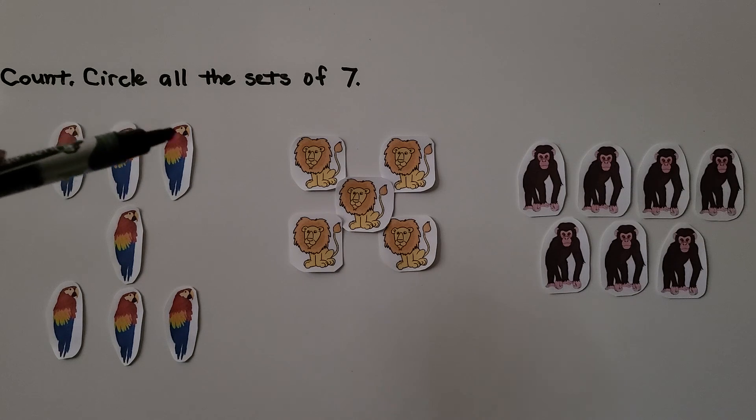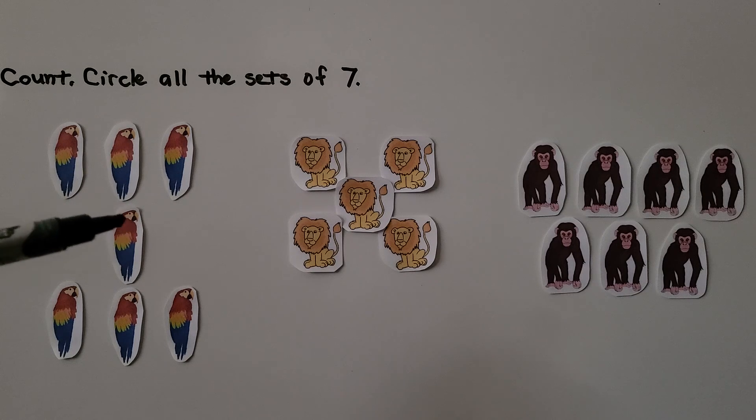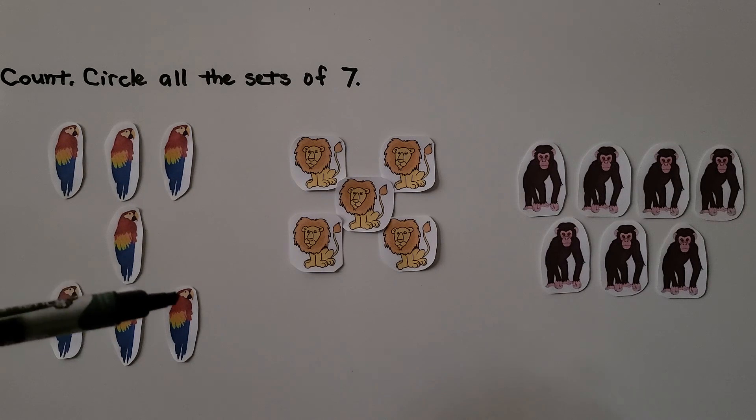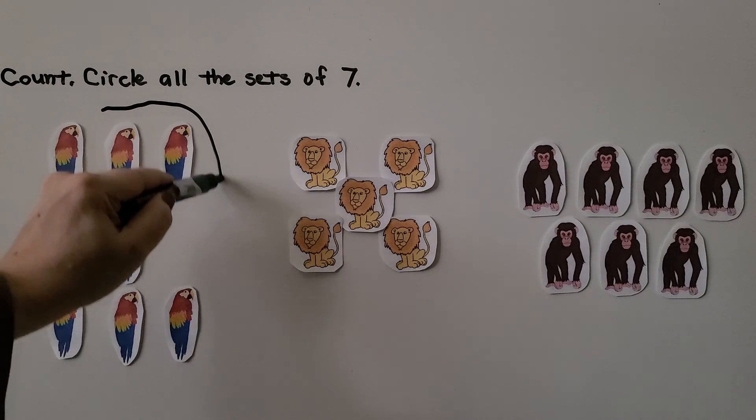Let's count the parrots. We have 1, 2, 3, 4, 5, 6, 7. There's 7 parrots. So we can circle the parrots. That's a set of 7.